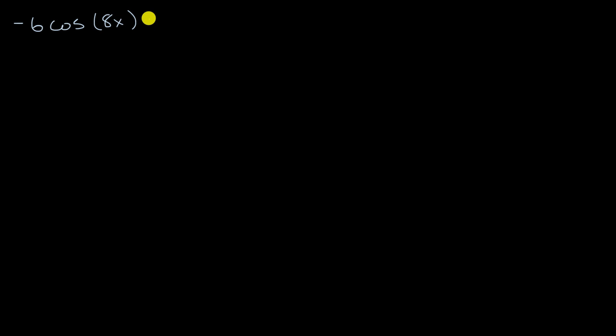The goal of this video is to find the solution set for the equation: negative six times the cosine of eight X plus four is equal to five. I encourage you to pause this video and see if you can have a go at this before we do it together. Remember, we want the entire solution set, not just one solution.